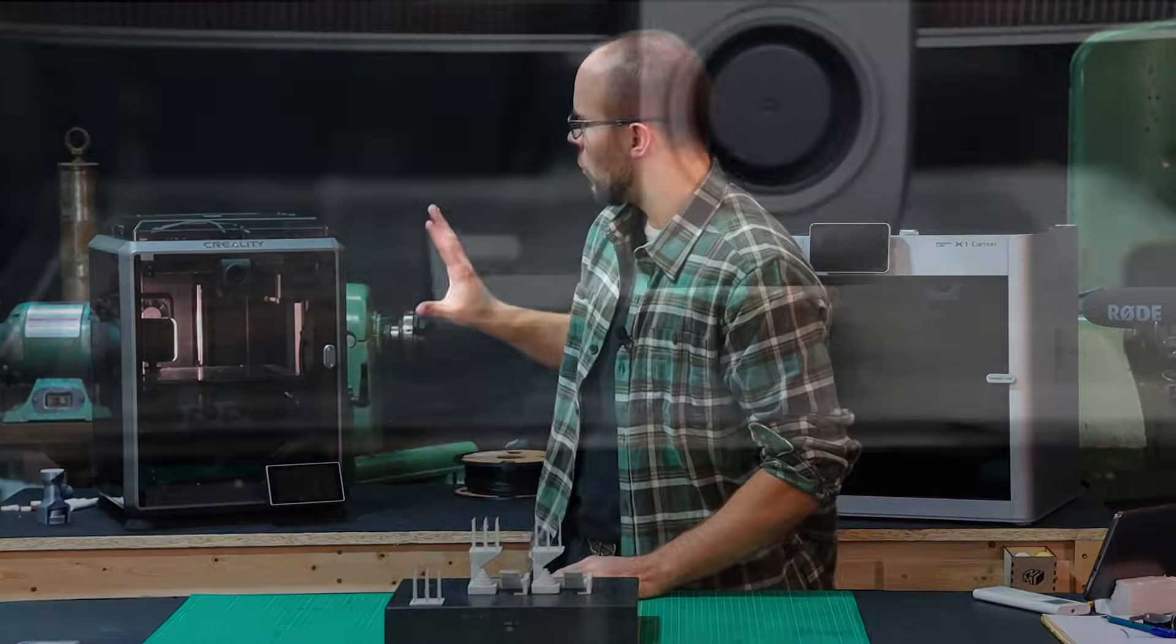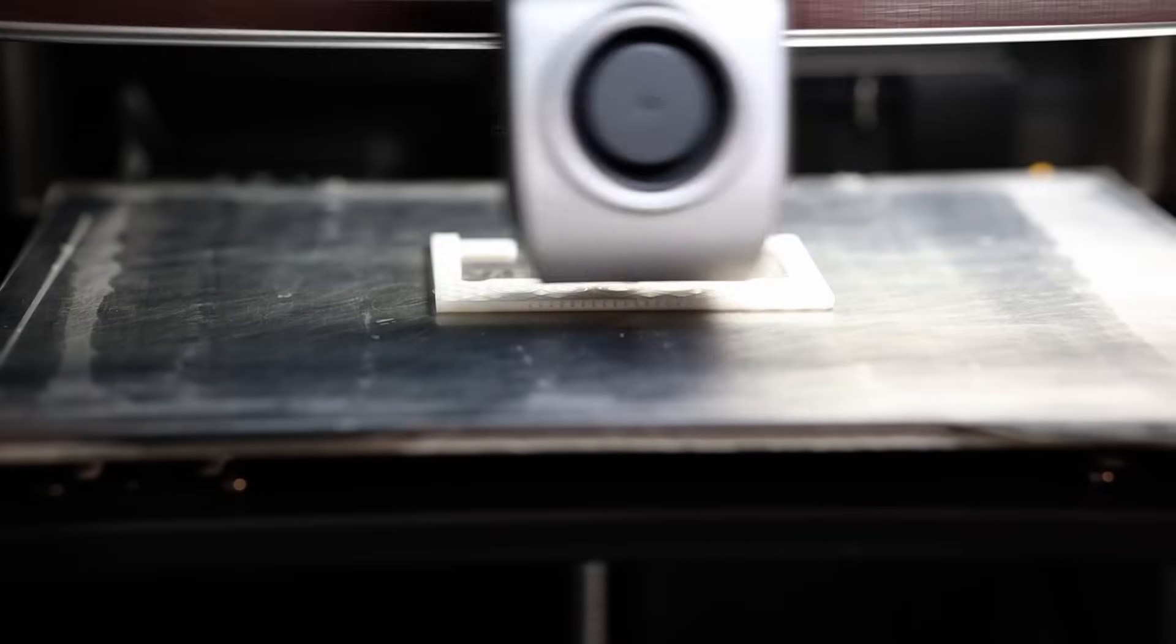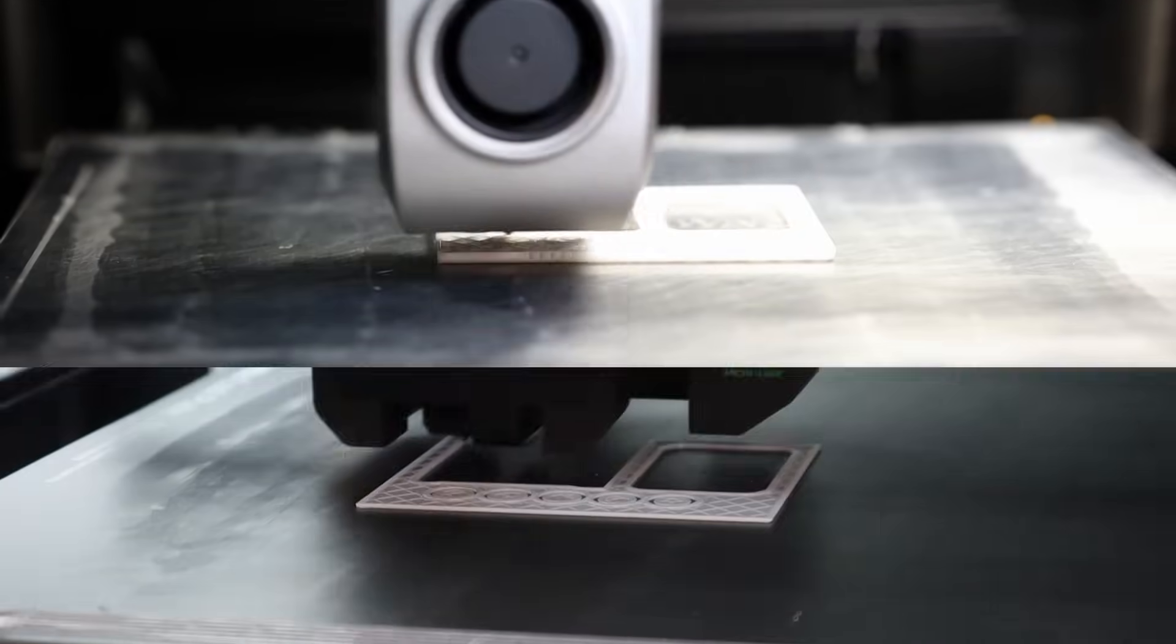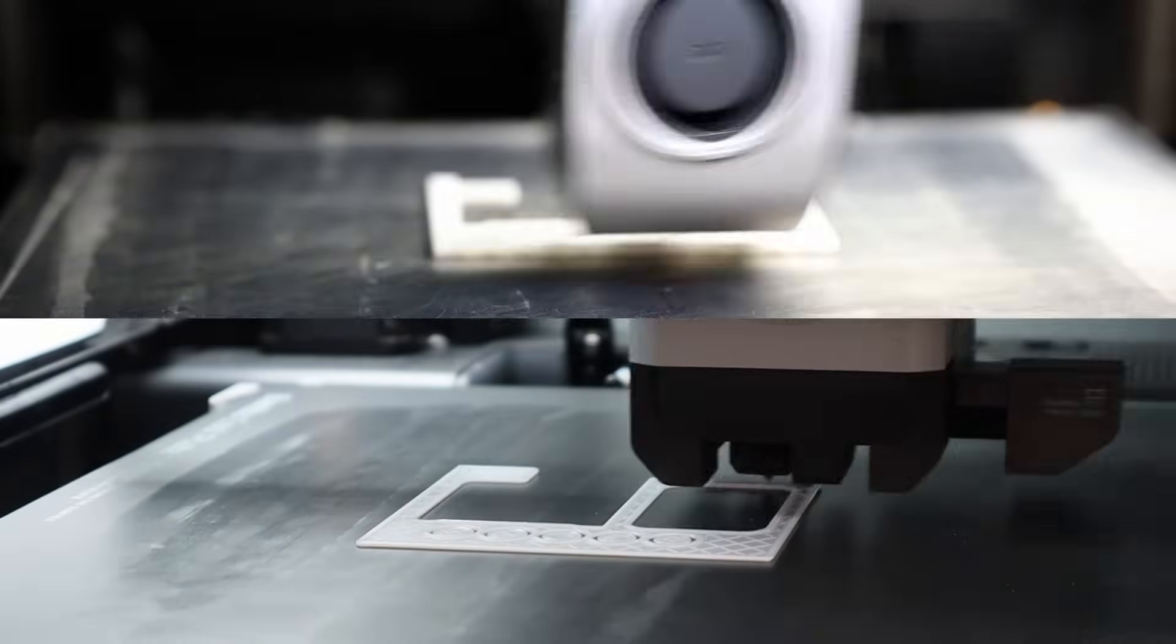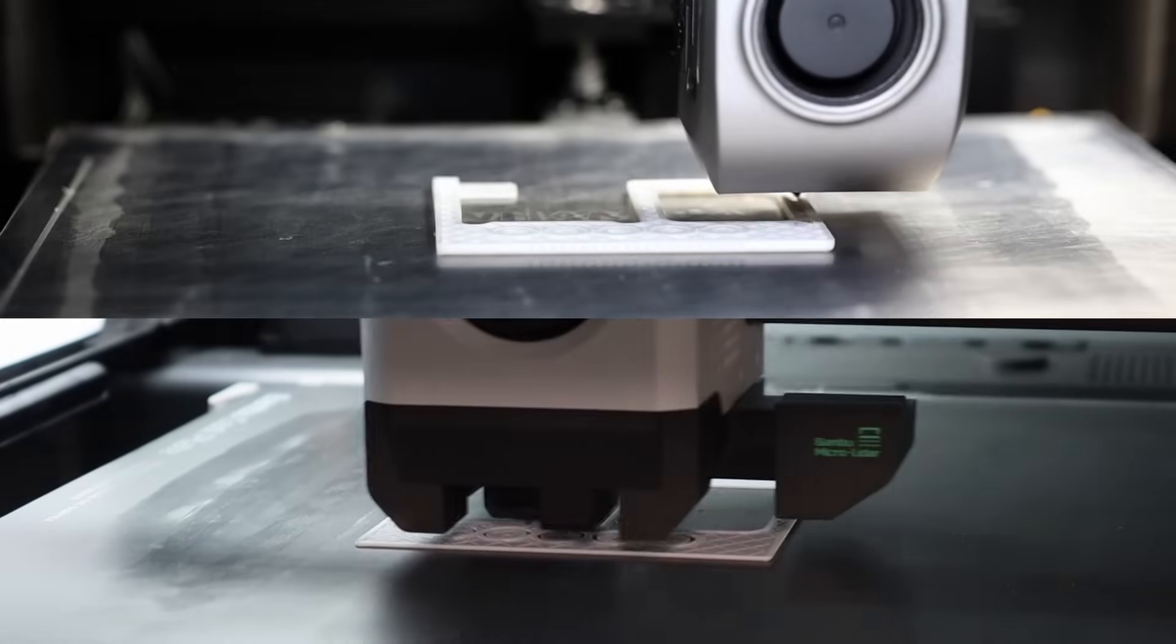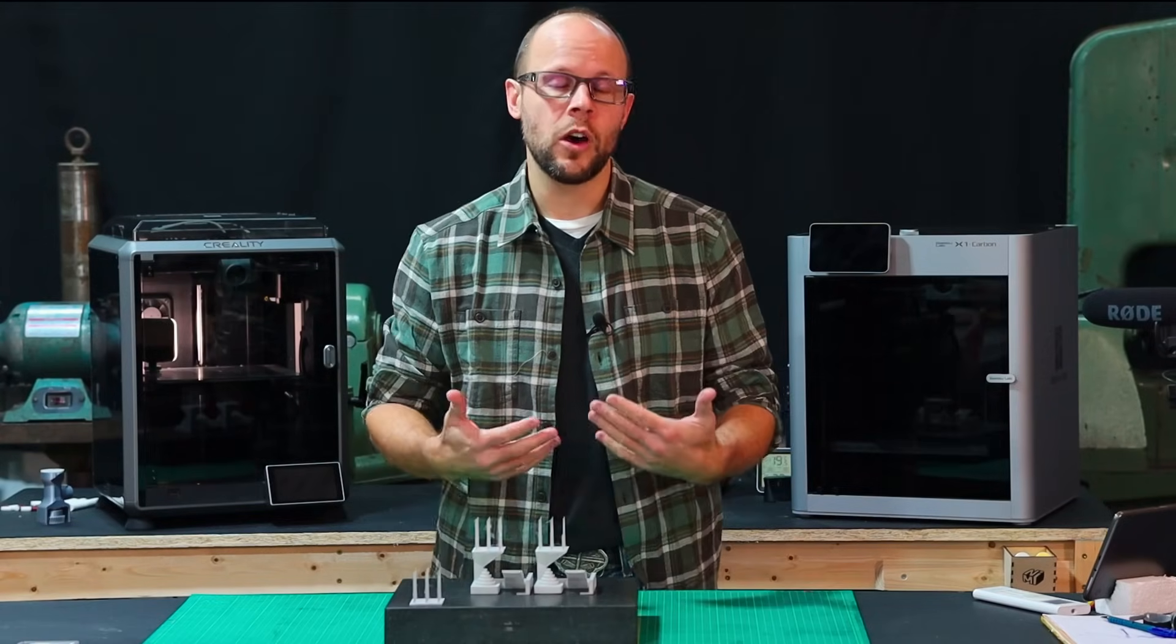In a previous video we pitted the Creality K1, a less expensive fast 3D printer, against the Bamboo Lab X1 Carbon, a much more expensive printer meant for high speed, in the ultimate head-to-head high-speed printing test where we tried to crank up the speeds as much as we could. It did answer some questions but also raised some questions in the comments section.